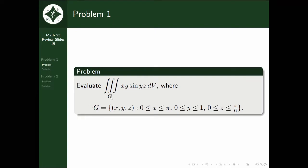Where do we begin? First, let's identify that our density function ρ is xy sin(yz). Next, let's note that all of these bounds in G are constants: 0, π, 0, 1, 0, and π/6. They're all constants.